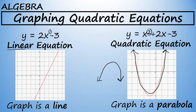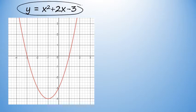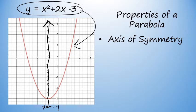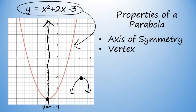In this video I'll tell you exactly how to draw the graph of a quadratic equation. Before going from the equation y equals x squared plus 2x minus 3 to the graph, let's talk about the properties of a parabola. A parabola has an axis of symmetry — a vertical line that splits the parabola into two mirror images.